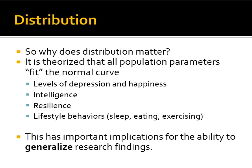So why does distribution matter? It is theorized that all population parameters fit the normal curve — depression, happiness, intelligence, resilience, lifestyle behaviors. This has important implications for the ability to generalize research findings from a sample to a population. Instead of saying a sample of people with depression responded this way to a treatment, we can say all people with depression will respond this way, because the sample follows the normal curve, and so does the population. That's how statistics works.